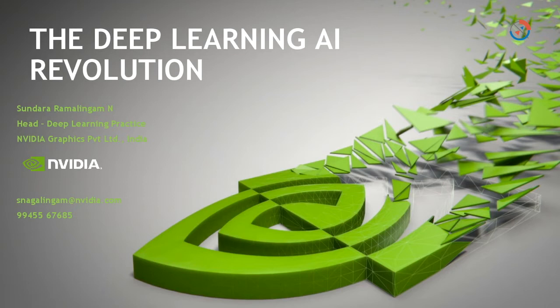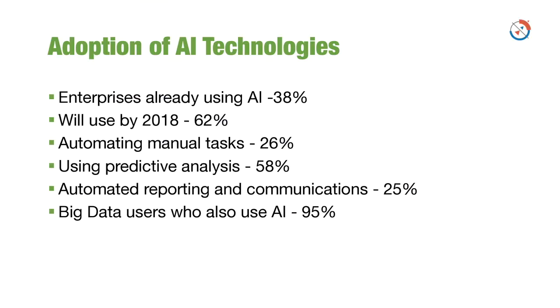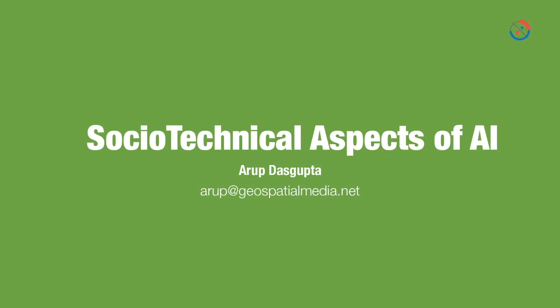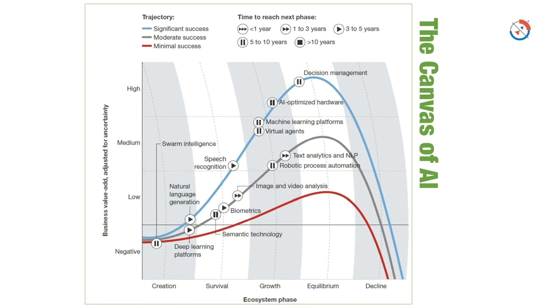I'm going to talk a little more generally, looking at some of the other technical and social aspects of artificial intelligence. As you've heard from Sundar, deep learning is one aspect of AI. If you look at the canvas of artificial intelligence, you'll find deep learning at the bottom left, with an arrow indicating it is three to five years from reaching the next phase — so deep learning is currently in the creation phase, and the next phase will be the survival phase.